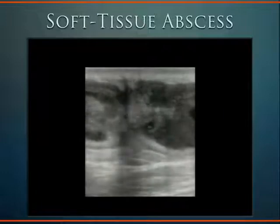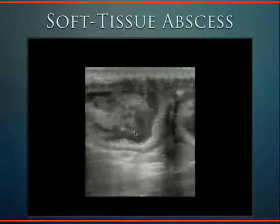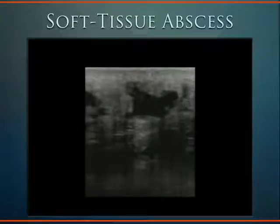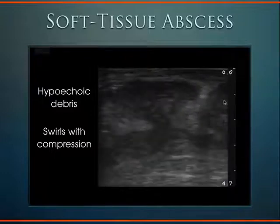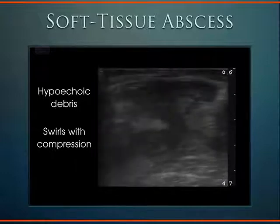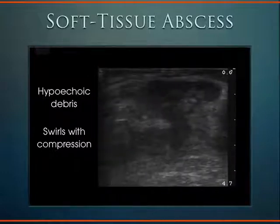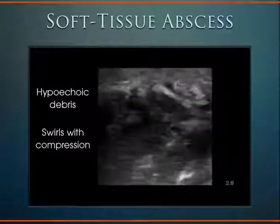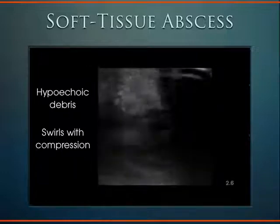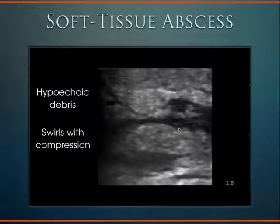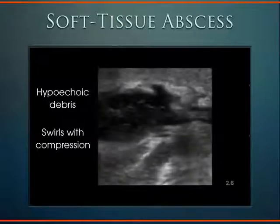Here's an abscess — we can see this hypoechoic debris layering out. This is what pus looks like. If we compress this area, we'll see the hypoechoic debris swirling around. Here's another example where on compression we can see swirling hypoechoic debris, sometimes connecting with other abscesses. Occasionally these abscesses are so large they can't be drained at the bedside and require drainage in the operating room under full anesthesia. Sometimes you'll see cobblestoning on top with abscess underneath; other times just abscess without any subcutaneous cobblestoning.